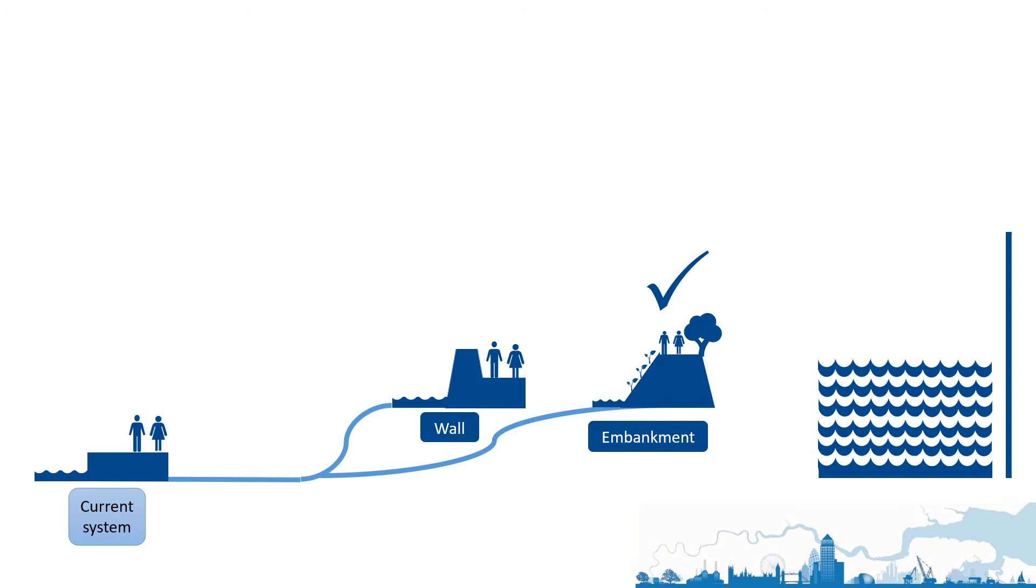Once the embankment is in place, it will protect you from flooding up to the water level indicated by the blue bar on the right. As long as water levels stay within this range, you'll have achieved your objective.